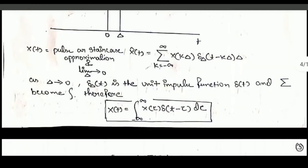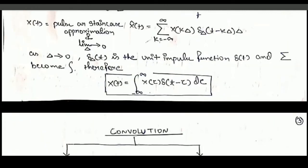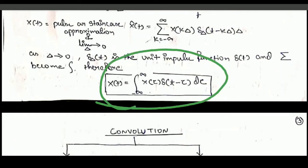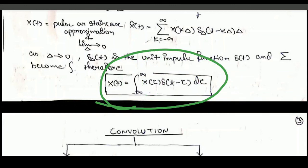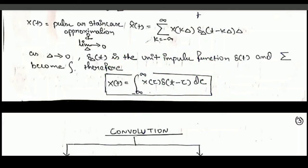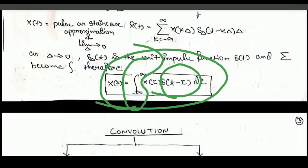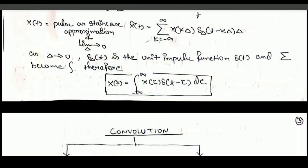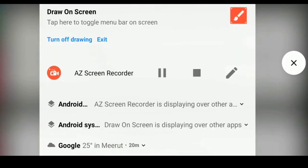When we let delta tend to 0, this approximation becomes equal to x(t). Hence, in continuous time, we can also represent a signal in terms of impulse signals. In discrete time we use summation, but in continuous time we use an integral, with the weighted function x(t) multiplied accordingly.